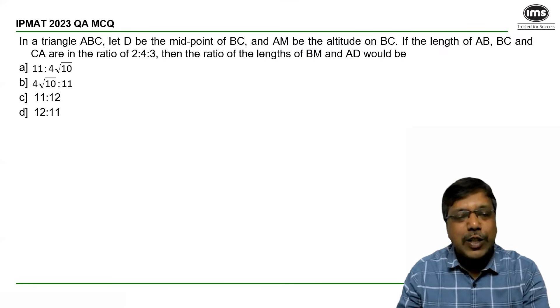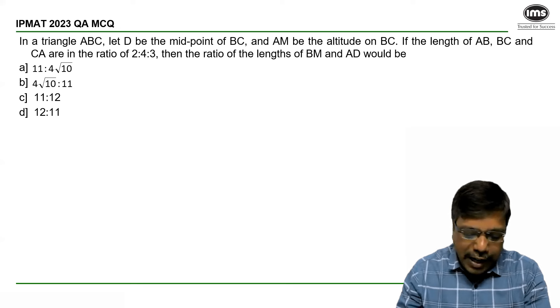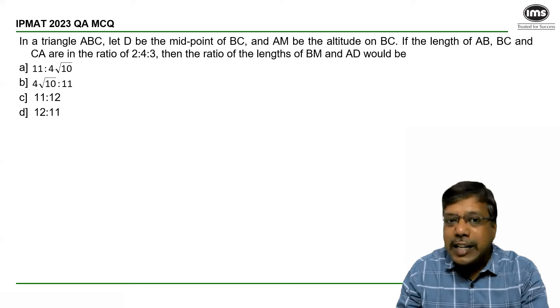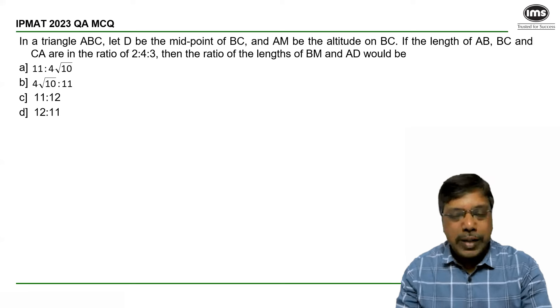Let us see how to answer this question on triangles. In a triangle ABC, let D be the midpoint of BC, and AM be the altitude on BC.